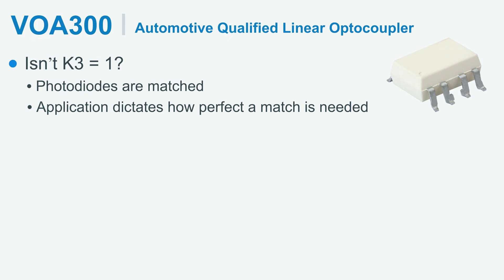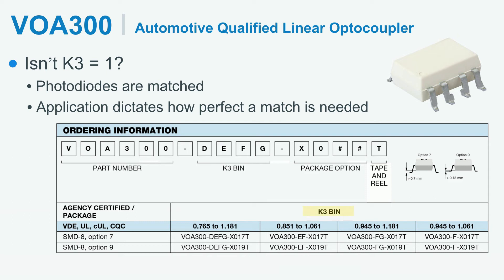But due to some manufacturing tolerances, it may happen that K3 is not exactly 1. If you look at the K3 bins in the datasheet, the more you move towards the right, the closer the K3 value gets. In addition, the application also dictates how perfect a match is needed.